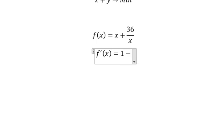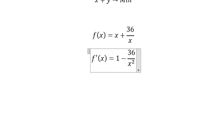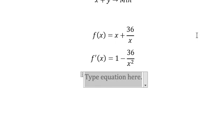We have f'(x) = 1 - 36/x². Next we need to find the critical points, so I will put the first derivative of the function equal to zero. So this one should be equal to zero.